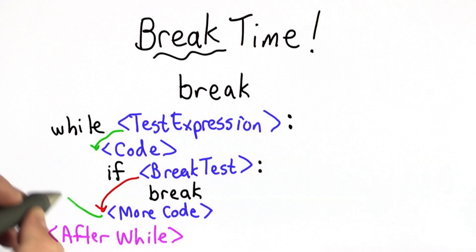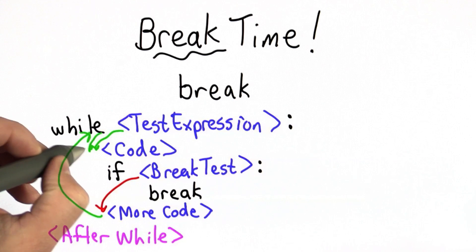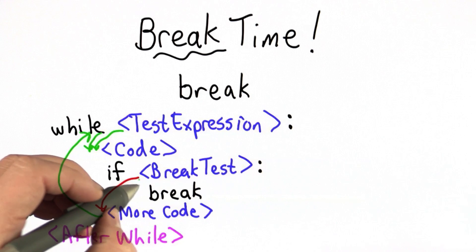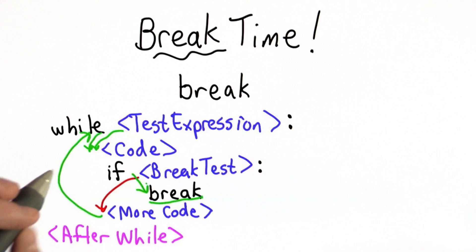We go back to the loop test, check the test expression again. If it's true, we run this code. If the break test is true, then we execute the break.